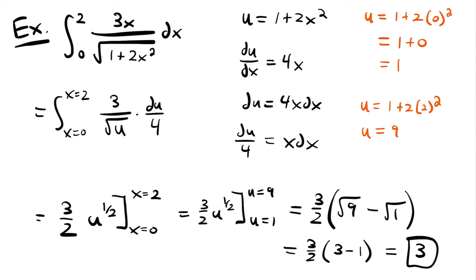You've now seen both methods for evaluating a definite integral using u-substitution. Once your bounds are in x but your function is in terms of u, you can either replace u with what it equals in terms of x, or change your bounds to values of u instead.